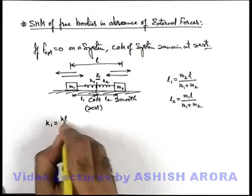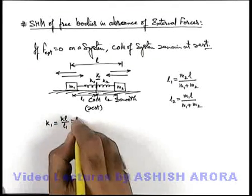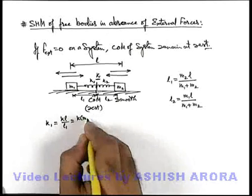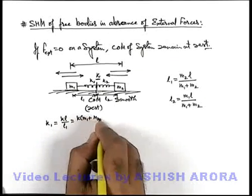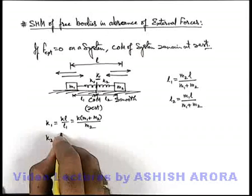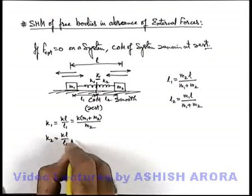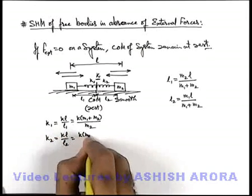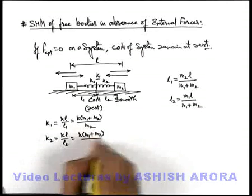Here k1 can be written as k*l/l1, which is k*(m1+m2)/m2. Similarly, k2 can be calculated as k*l/l2, which is k*(m1+m2)/m1.